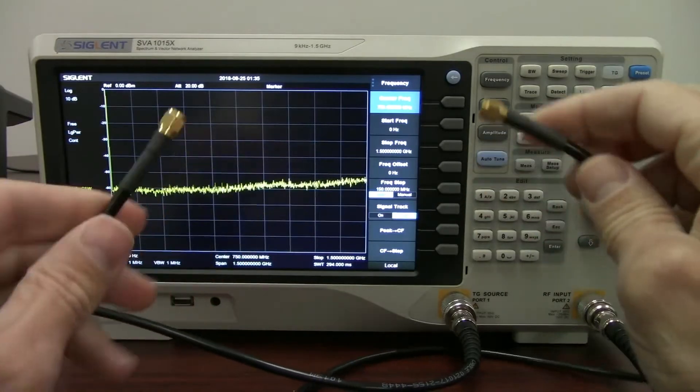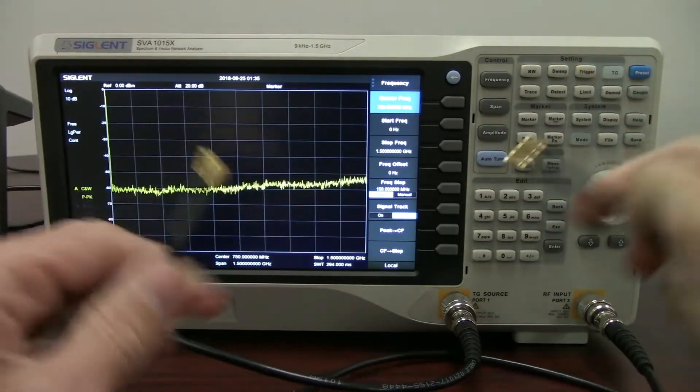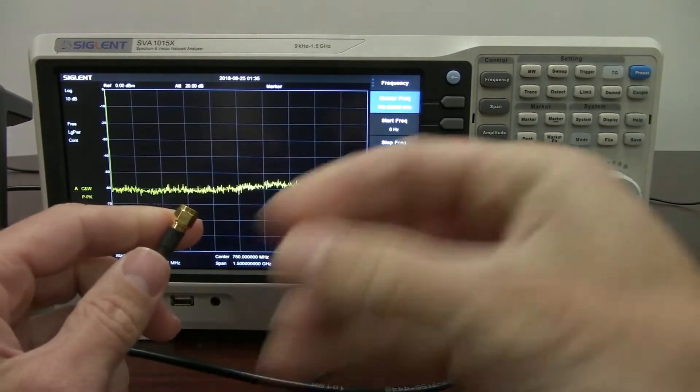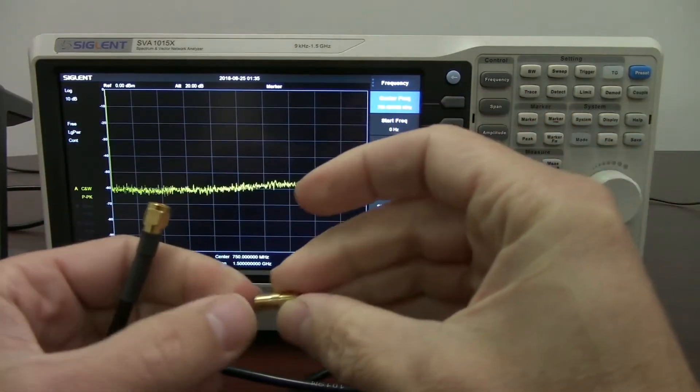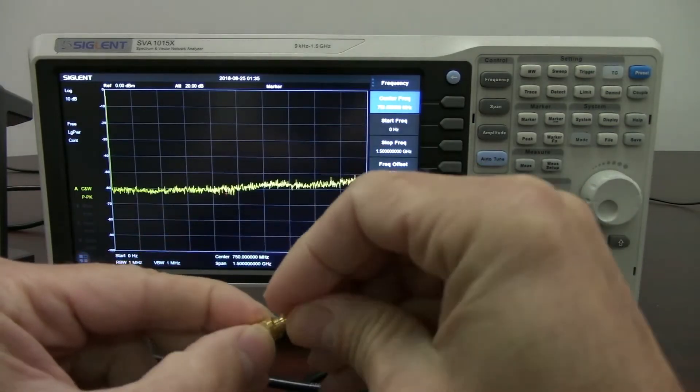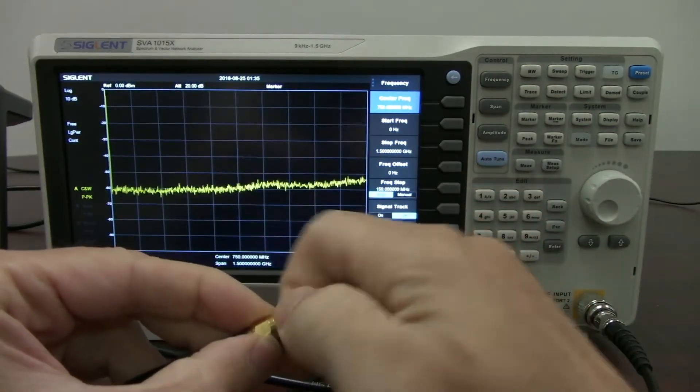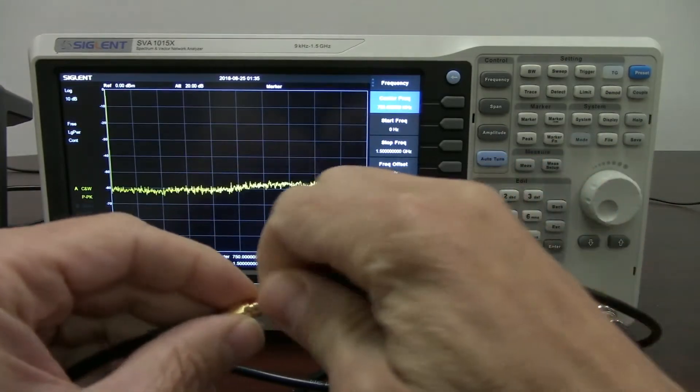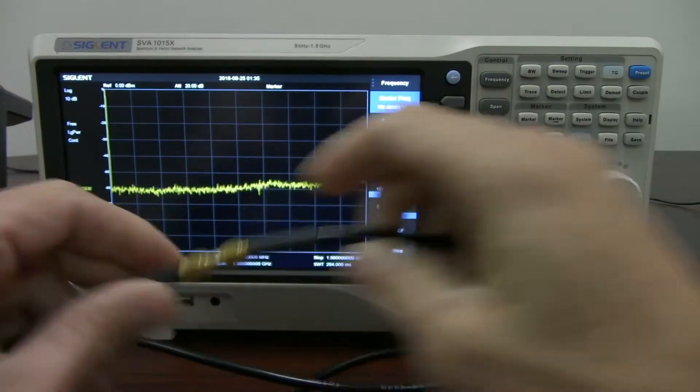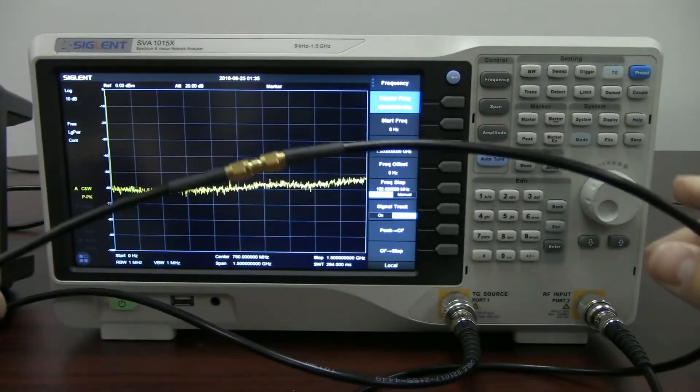But the first thing that we want to do for accuracy is we've got the two cables. What we're going to use is a through adapter. This is an SMA to SMA through adapter, and it just simply is going to couple the tracking generator output to the RF input. And so I'm just connecting these two up, nice and tight, and there we are.